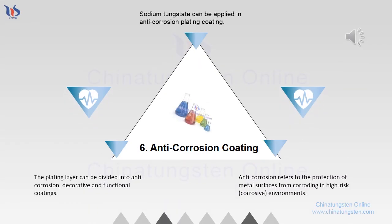Anti-corrosion Coating: Sodium tungstate can be applied in anti-corrosion plating coatings. The plating layer can be divided into anti-corrosion, decorative, and functional coatings. Anti-corrosion refers to the protection of metal surfaces from corroding in high-risk, corrosive environments.